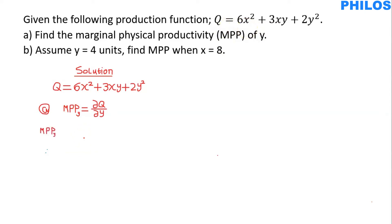So MPP of y will be equal to — remember, we are differentiating Q with respect to y. There is no y in the first term, which is 6x squared, so the whole thing should be considered as a constant. Since we are differentiating with respect to y only, when you differentiate this constant 6x squared with respect to y, you get 0. So the first term gives 0, plus...